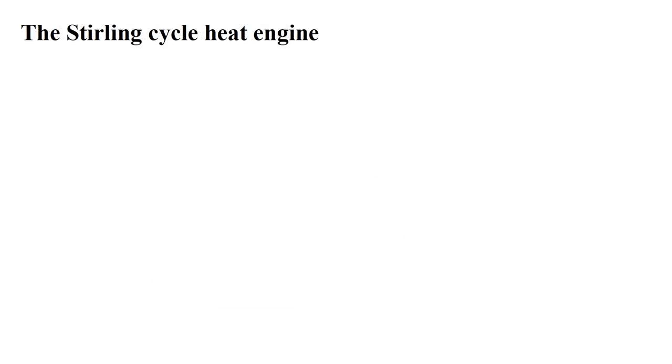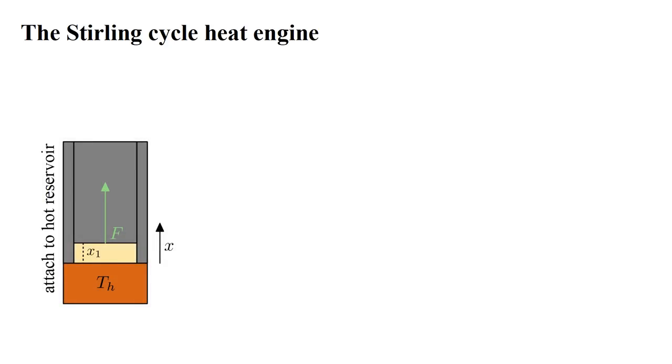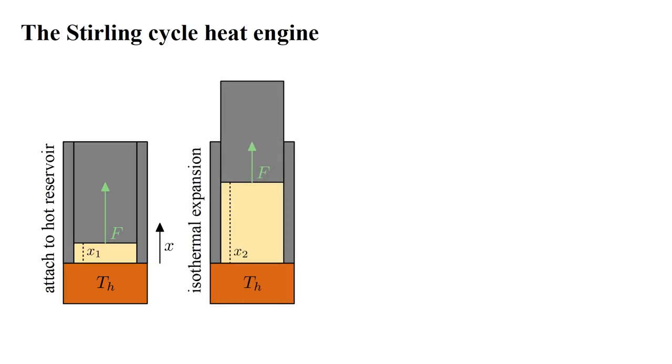We now have enough theory to design a simple but useful heat engine based on the so-called Stirling cycle. We start with the piston in position X1. The gas is maximally compressed and in contact with a hot reservoir at temperature TH. The gas undergoes isothermal expansion until the piston position is X2. During this, the gas exerts a varying force F on the piston. The resulting work done on the environment is NKT hot times natural log of X2 over X1.